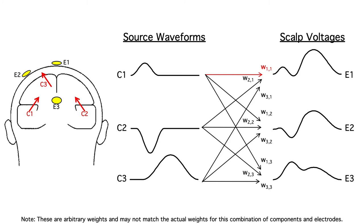For example, there's one weight between component one and electrode one, and another weight between component two and electrode one, and a third weight between component three and electrode one. You have a different weight for each combination of component and electrode site.